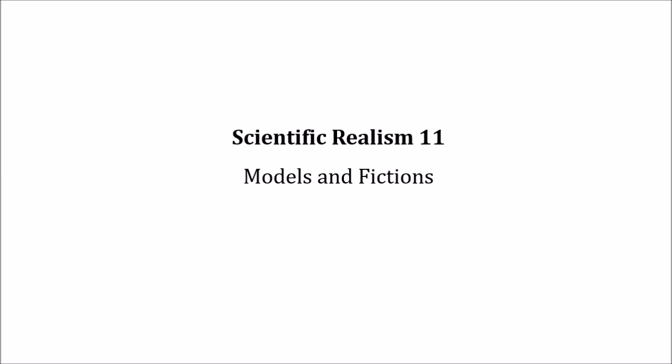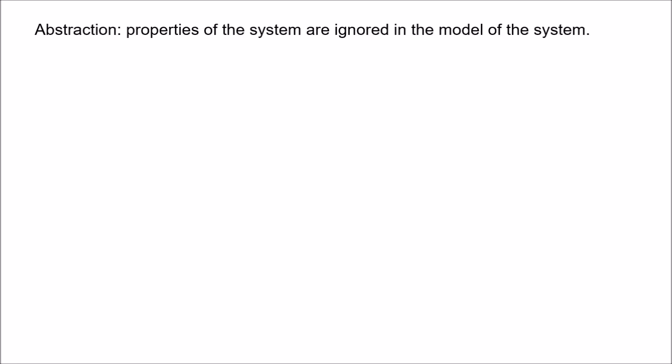A number of philosophers have suggested that the use of models in science poses problems for realism, and this is because scientific modelling very often involves fictions. Scientists will build into models assumptions that they know to be false, and there are two main types of fiction in science: abstraction and idealisation.